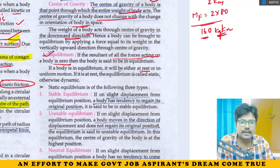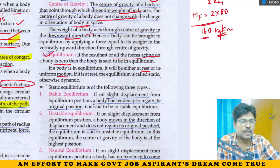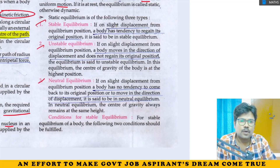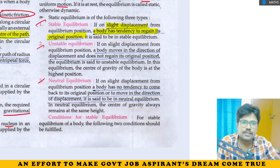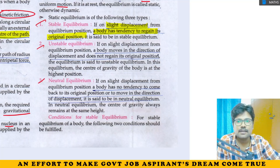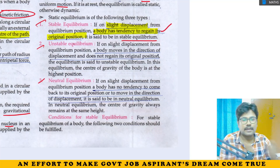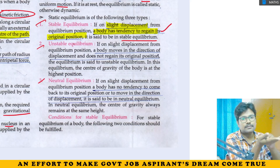Equilibrium: a body is said to be in equilibrium when the resultant of all forces acting on it is zero, whether at rest or in uniform motion. There are three types of equilibrium: stable, unstable, and neutral.